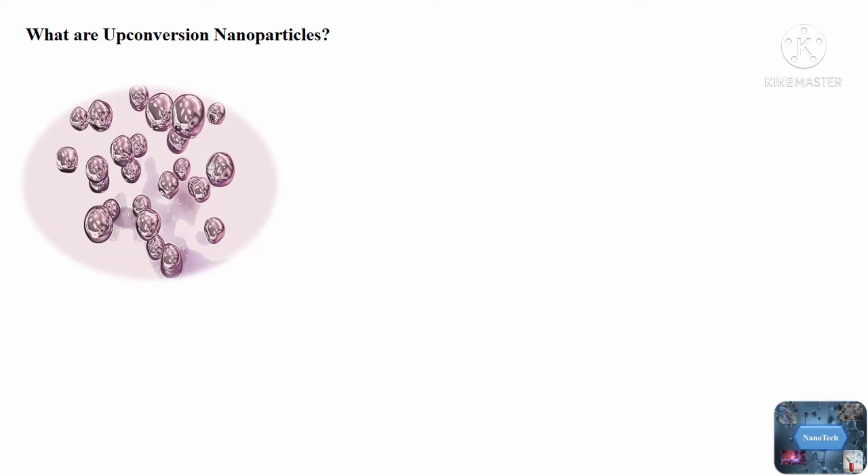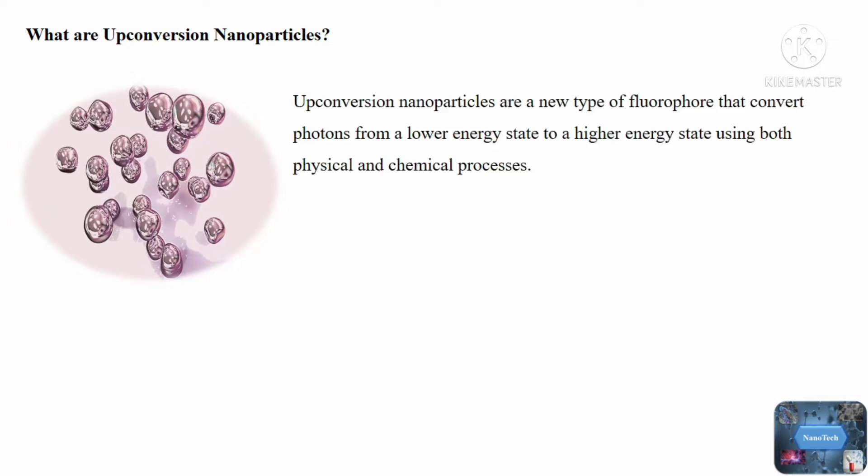What are upconversion nanoparticles? Upconversion nanoparticles convert photons from a lower energy state to a higher energy state using both physical and chemical processes. These particles are known to absorb energy in the infrared range and emit energy in the visible or ultraviolet range.